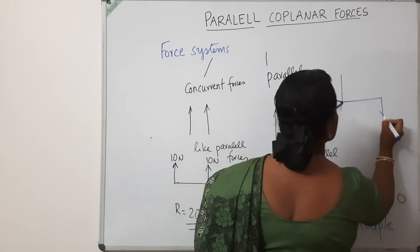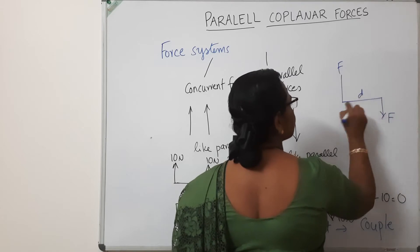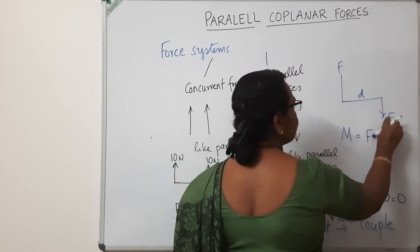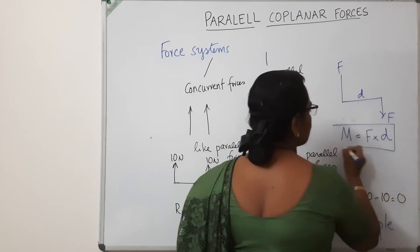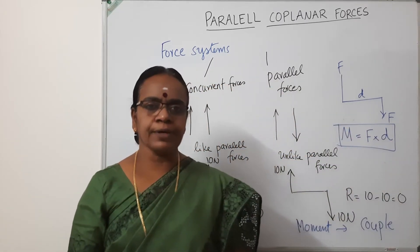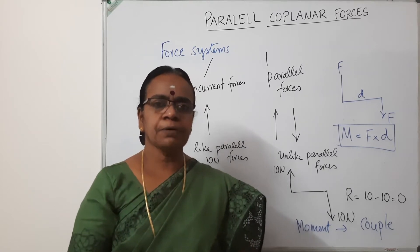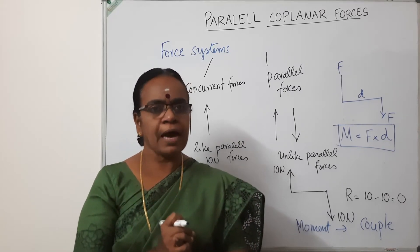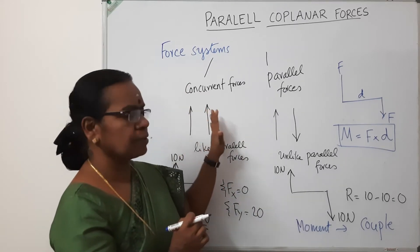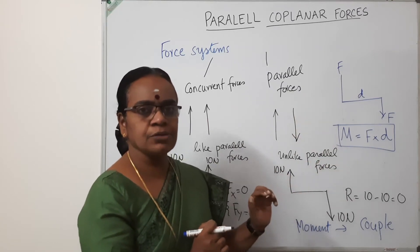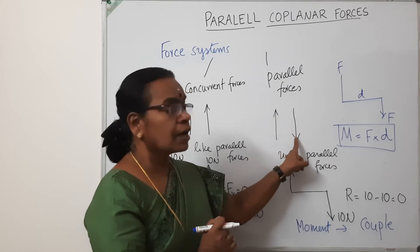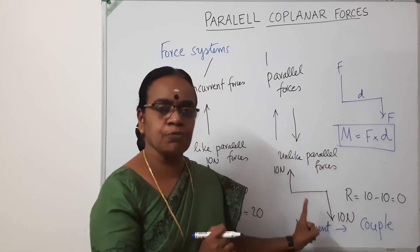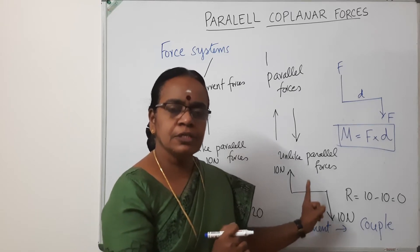To generalize: suppose two unlike parallel forces F are separated by a distance D. Then the moment of the couple M equals F into D — one of the forces multiplied by the perpendicular distance, which is the arm of the force. These are the general themes in parallel forces: like parallel forces have the same direction; unlike parallel forces have directions opposite and parallel to each other. If the unlike parallel forces have equal numerical values, there is no resultant force but they introduce a moment, called a couple.